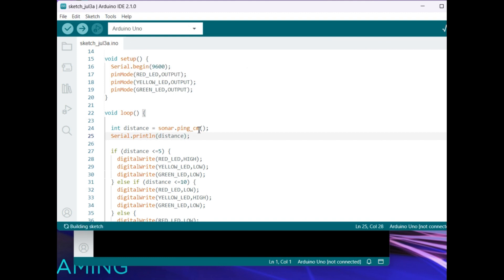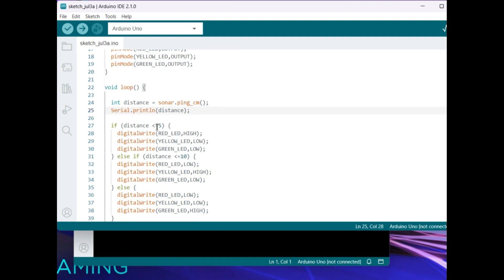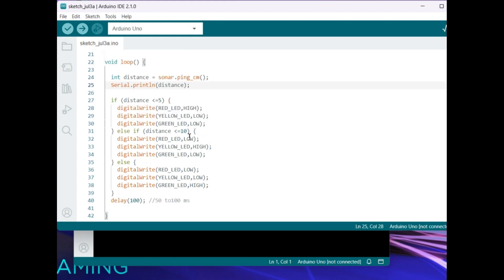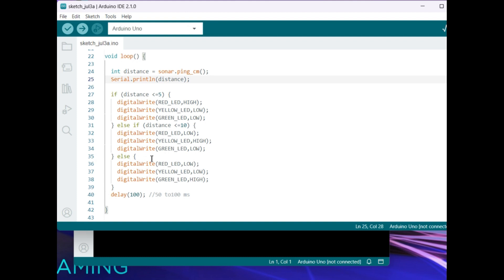So now I'm getting the distance and I'm printing over here. If the distance is less than five centimeters, I'm indicating the red LED is high, the rest of them is low. If the distance is less than 10 centimeters, then yellow LED will be high, the rest of the two will be low. If it is more than 10 centimeters, the green LED will be high.